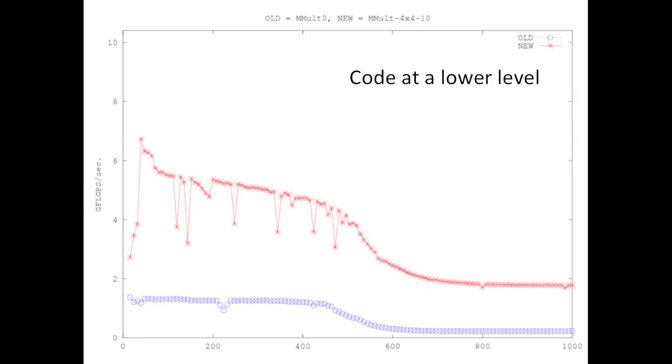If we then do pull all of these tricks by explicitly saying that certain elements of C should stay in registers and by what's called loop unrolling and coding at a much lower level, like we illustrated a little bit earlier, we actually get performance that is quite respectable. The red line here.